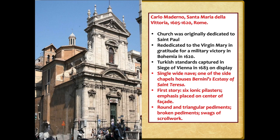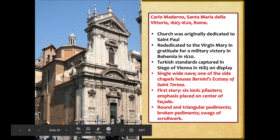Now we move on to a piece of Baroque architecture you have to know: Santa Maria della Vittoria, by architect Carlo Maderno. This church is where the Ecstasy of Saint Teresa is housed. It was originally dedicated to Saint Paul and then rededicated to the Virgin Mary in gratitude for a military victory in 1620. It has a single wide nave with side aisles on either side, and chapels along the nave — one of which houses Bernini's Ecstasy of Saint Teresa.